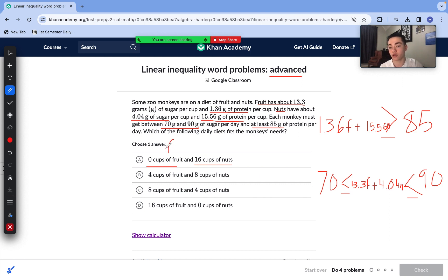So with our first answer choice we have F equals 0 and N equals 16. We're going to substitute both of these values into one of our inequalities and see if it remains true. 15.56 times 16 is 248.96 which definitely fulfills our first requirement. It is greater than or equal to 85. Now we're not going to be using any grams of fruit whatsoever because of zero cups of fruit. Now we do 4.04 times 16. We have 64.64 grams of sugar. That does not fulfill our second inequality meaning that answer choice A is incorrect.